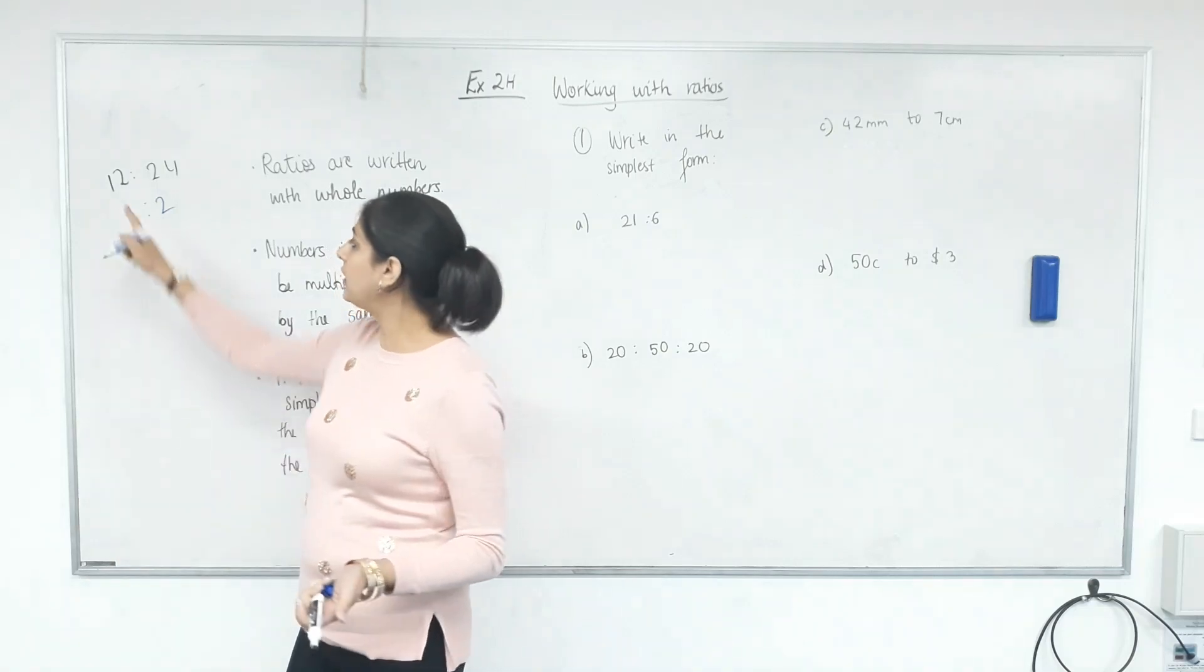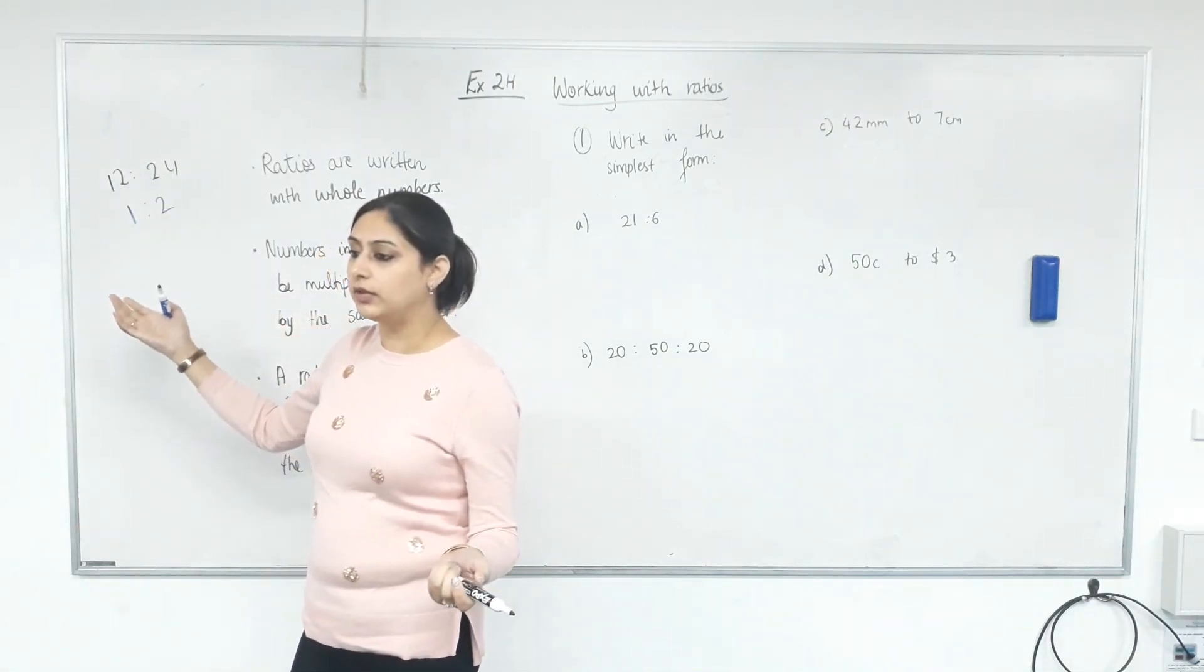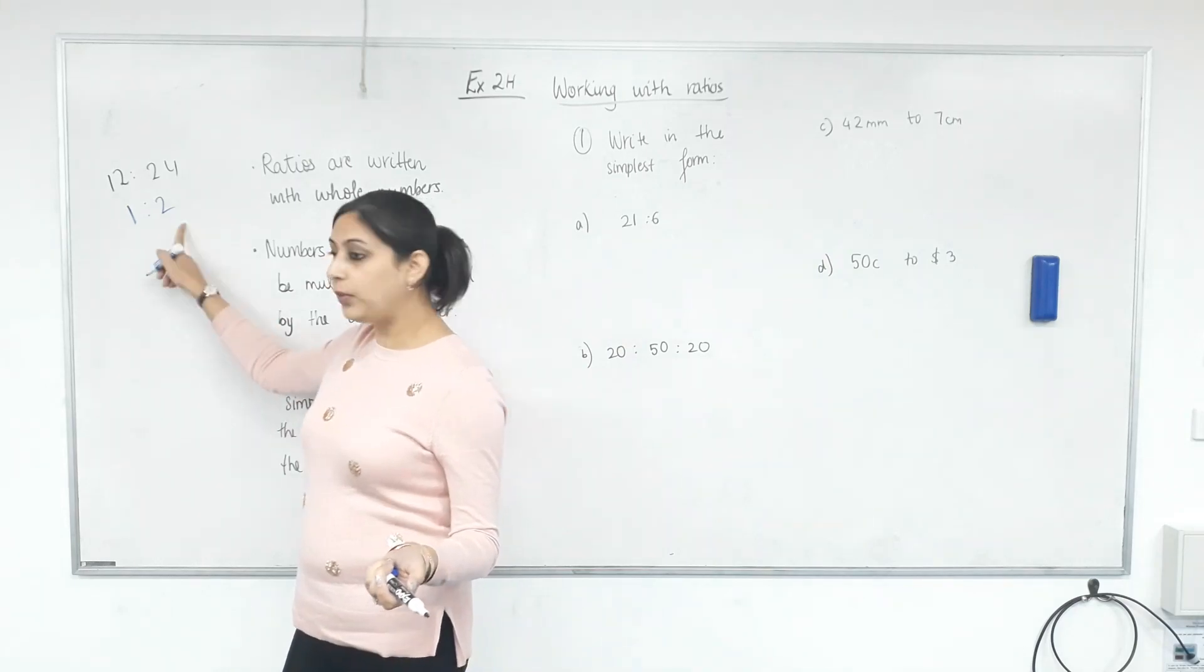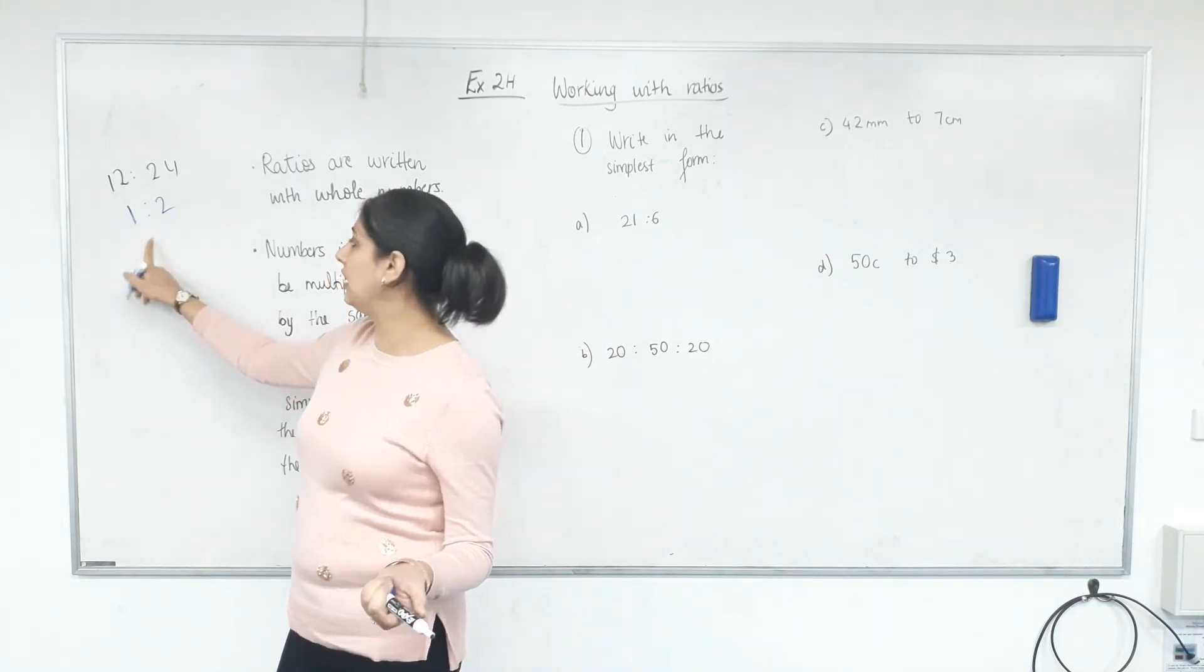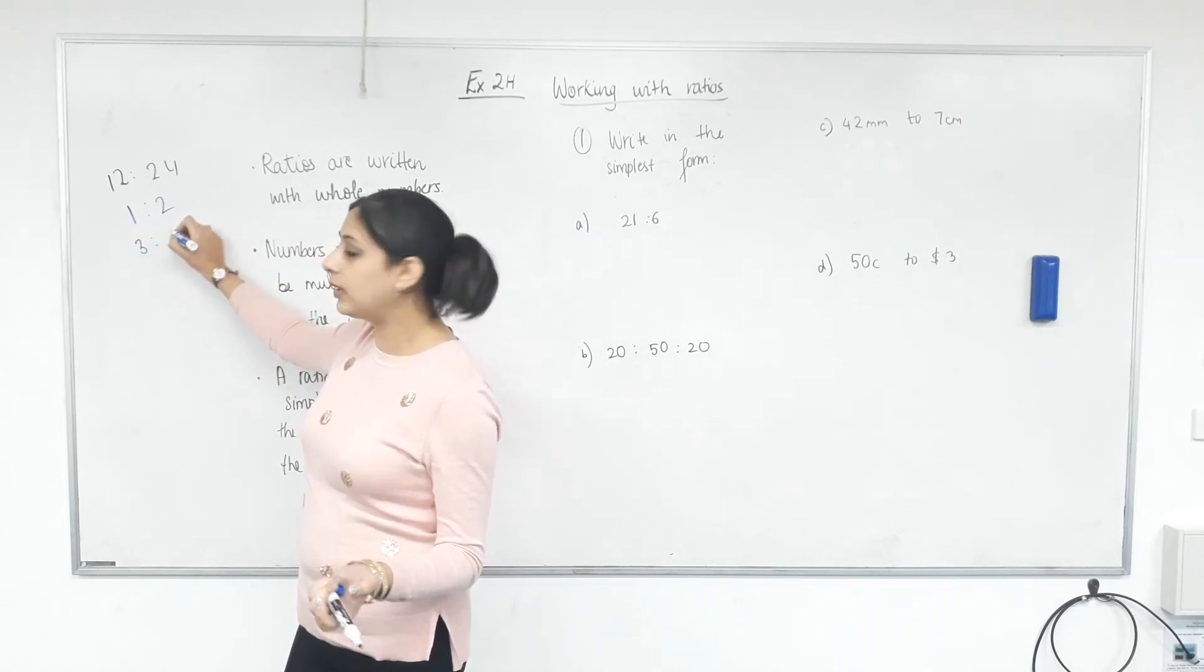Yes. So, what have I done? Have I divided this by 12 and that by 12? So I can do that. Can I multiply both by the same number? Yes. So, let's multiply these by 3. 1 times 3? 2 times 3?